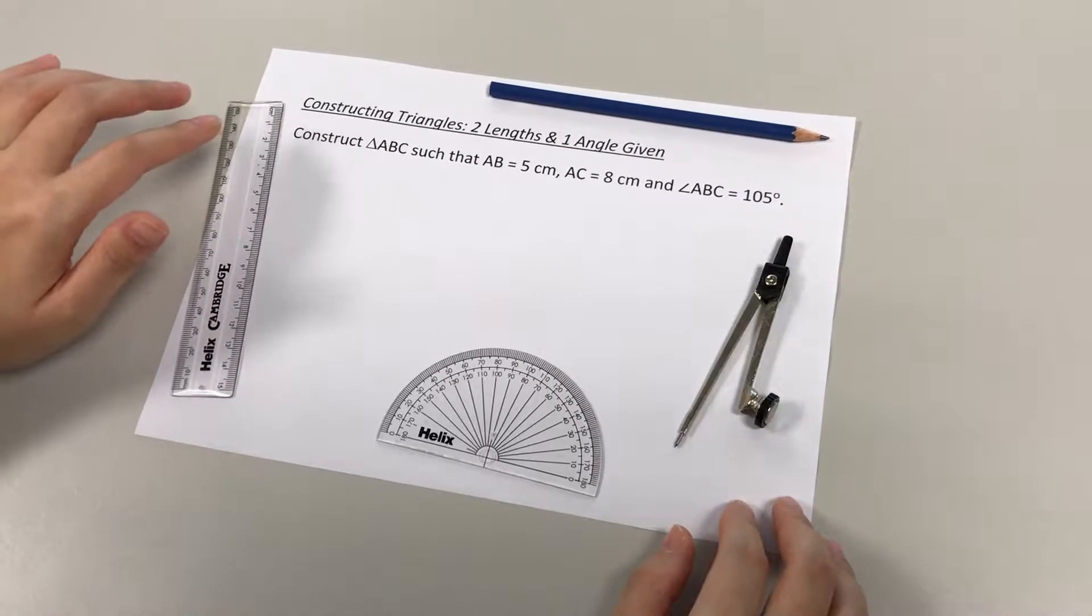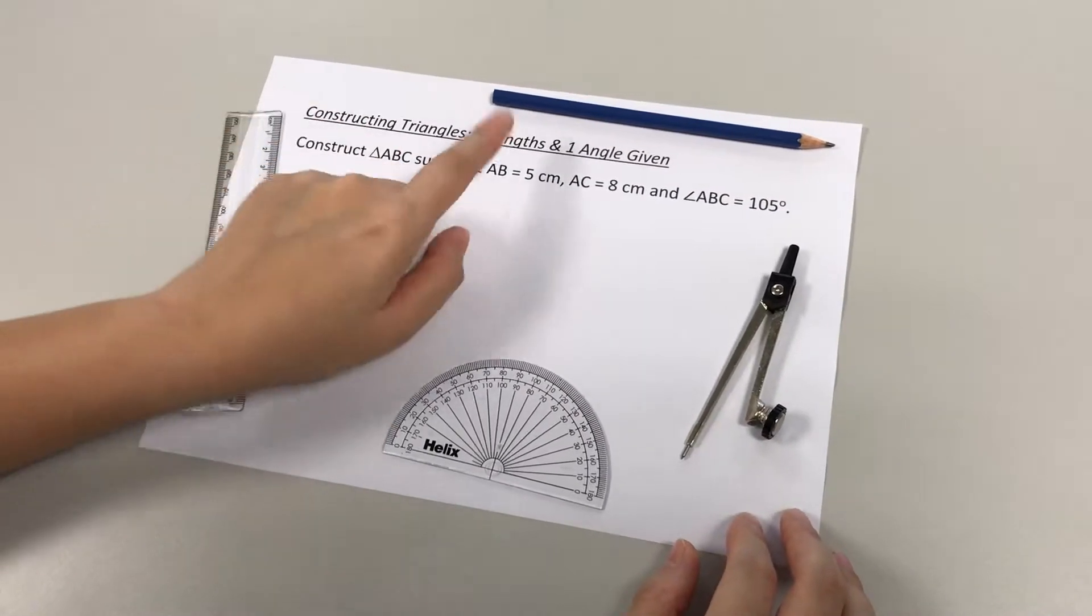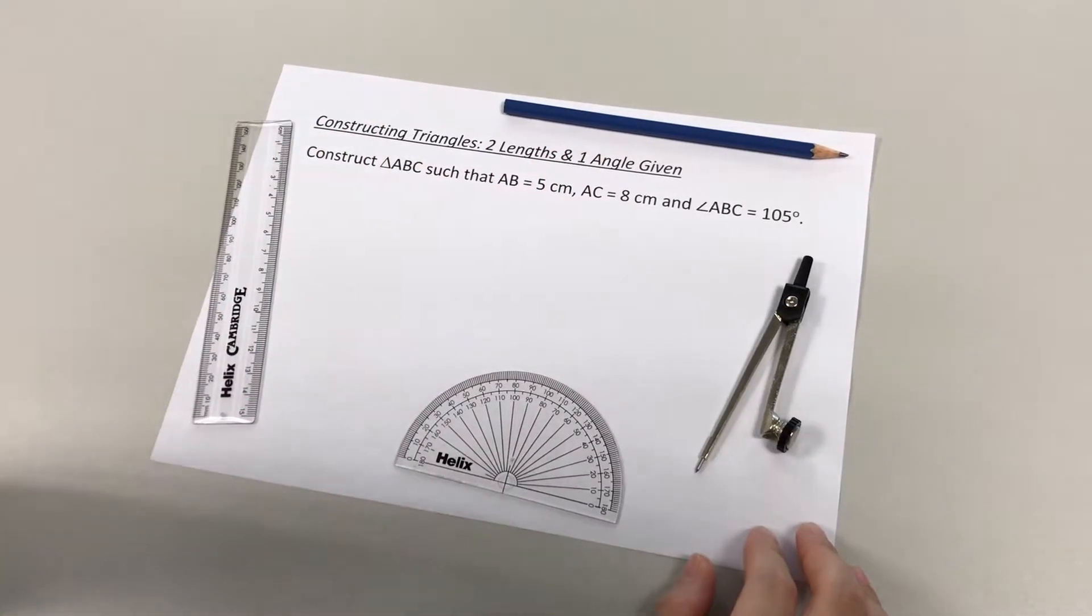Welcome back. Now we are going to learn how to draw a triangle when we're given two lengths and one angle.